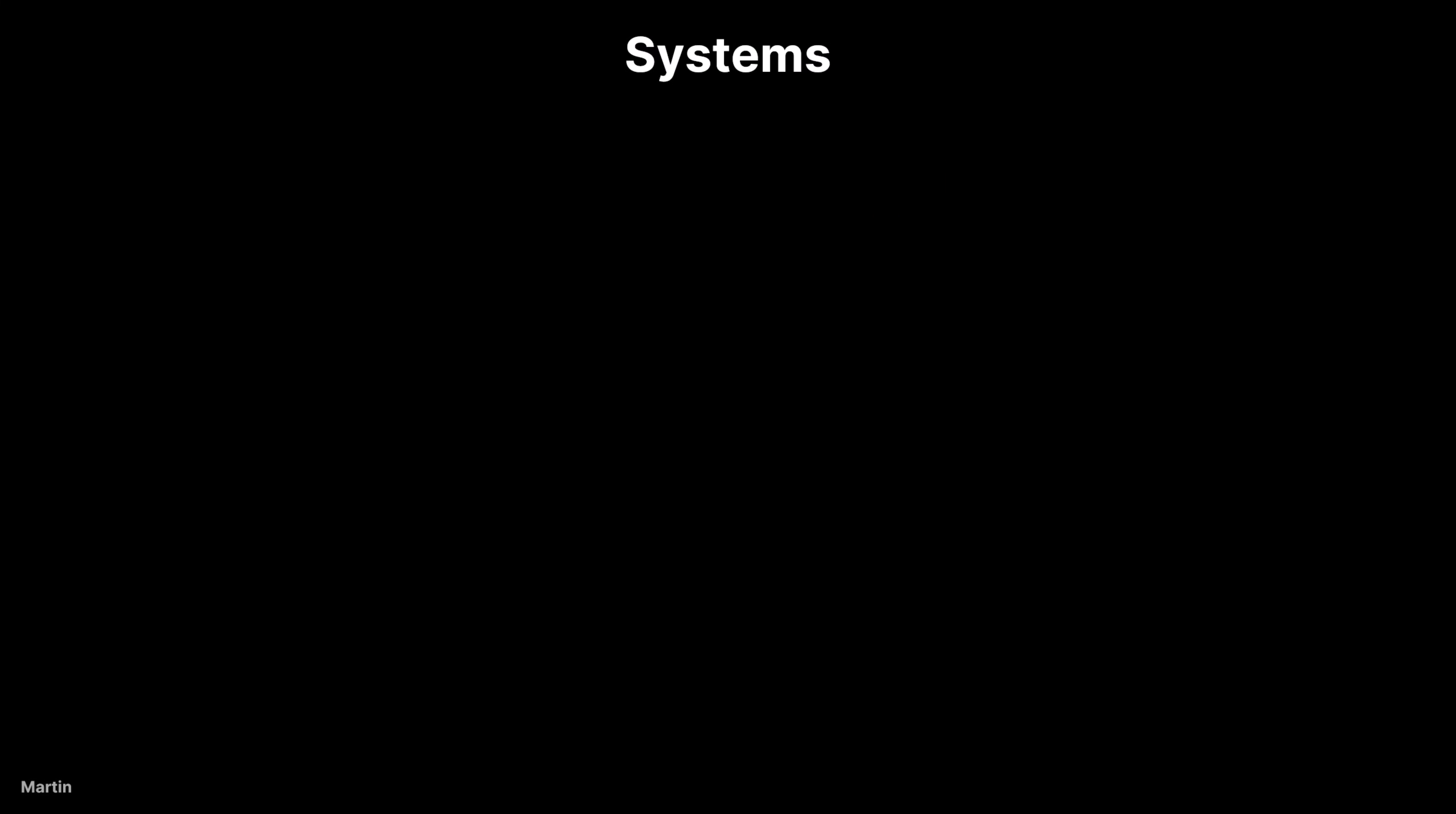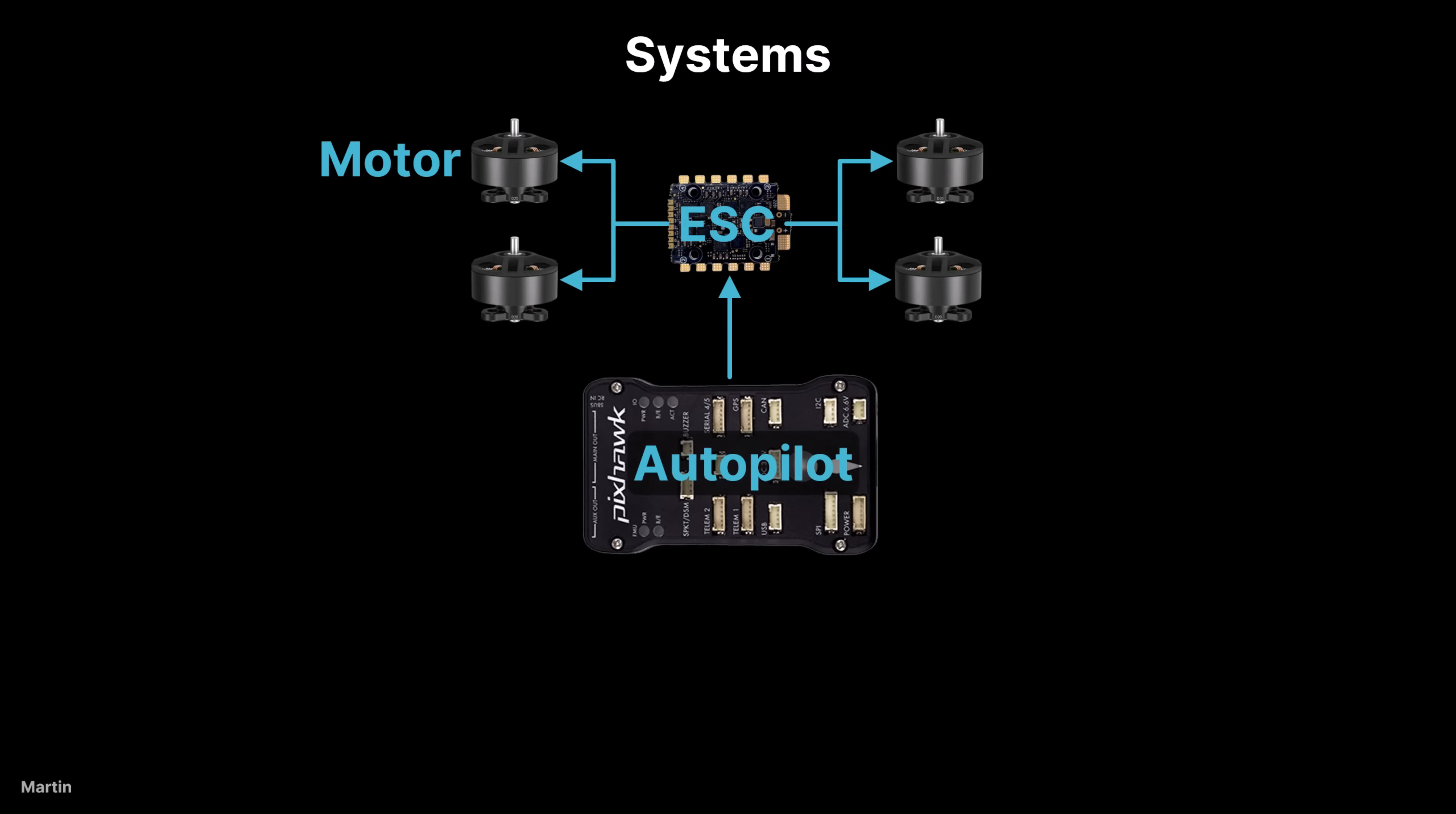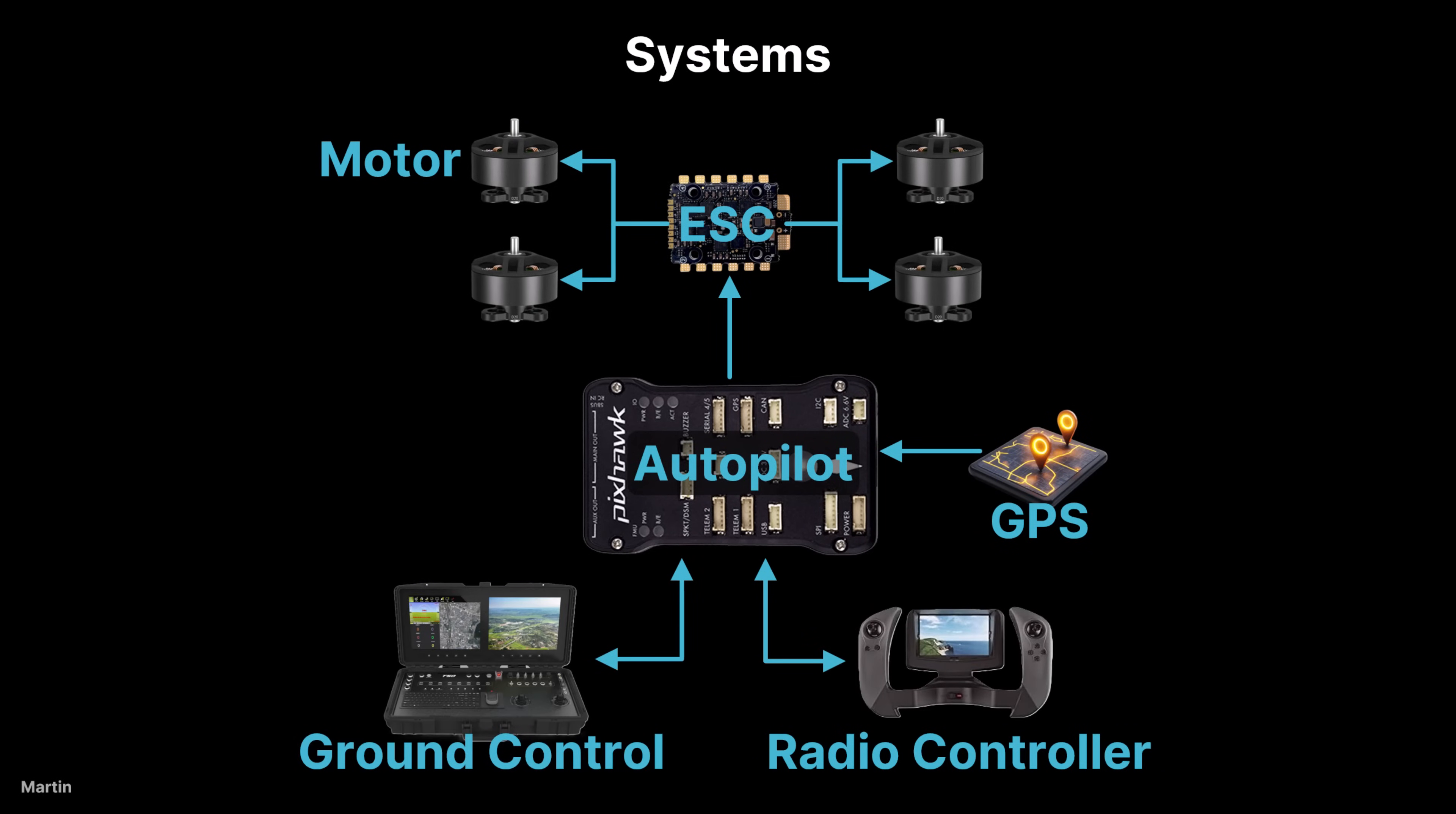A quadcopter system comprises four motors, an electronic speed controller (ESC), an autopilot controller, a GPS module, a remote controller (RC), a ground control station (GCS), and a battery.